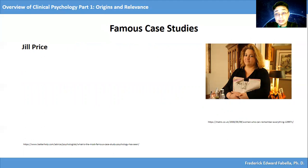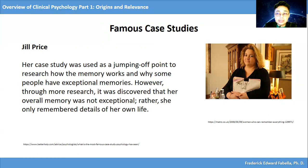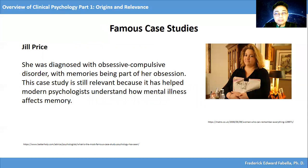Let's consider the case of Jill Price. Ms. Price is one of a few documented cases of hyperthymesia, or an overactive memory, that allowed her to remember such mundane things as what she had for dinner on an average day in August 20 years previously. Her case study was used as a jumping-off point to research how memory works and why some people have exceptional memories. However, through more research, it was discovered that her overall memory was not exceptional — she only remembered details of her own life. She was diagnosed with obsessive-compulsive disorder, with memories being part of her obsession. This case study is still relevant because it has helped modern psychologists understand how mental illness affects memory.